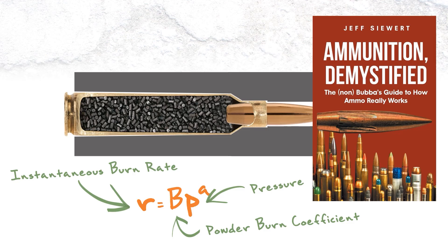So once again, the instantaneous burn rate R equals B times P raised to the A power. A was not defined in the book, so I actually reached out to Jeff Sewert and asked for insight. He said A is derived from something called a closed bomb test — a specialized piece of test equipment used specifically for testing propellants.